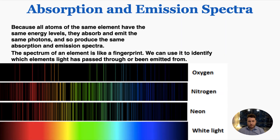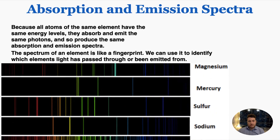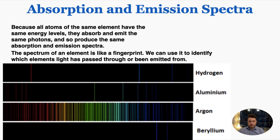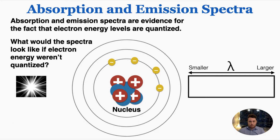The spectrum of an element is like a fingerprint we can use to identify which elements light has passed through or been emitted from. These are the emission spectra of different common elements — you can see how each one is unique. We can always identify which element we're seeing because we already know what that element's spectrum looks like. This is actually how we know which elements exist in stars: we look at the light from stars, see which wavelengths are missing, and match them to element spectra. This is how we know the chemical composition of the entire universe, including the Sun.